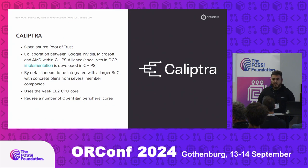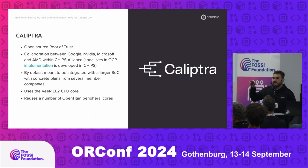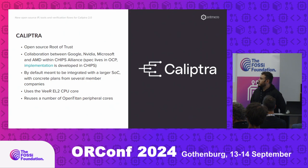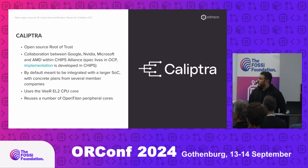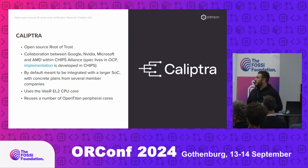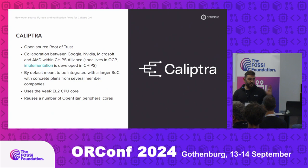Basically, the default target originally was to build an open source core that you can simply put into your bigger SOC design. It uses the VeeR EL2 CPU core, which is also an open source core you can find on Chips Alliance GitHub. The design itself reuses a bunch of OpenTitan peripherals. OpenTitan is another project focusing on open source root of trust — they develop a bunch of high-quality cores and peripherals that we simply reuse in Calyptra.